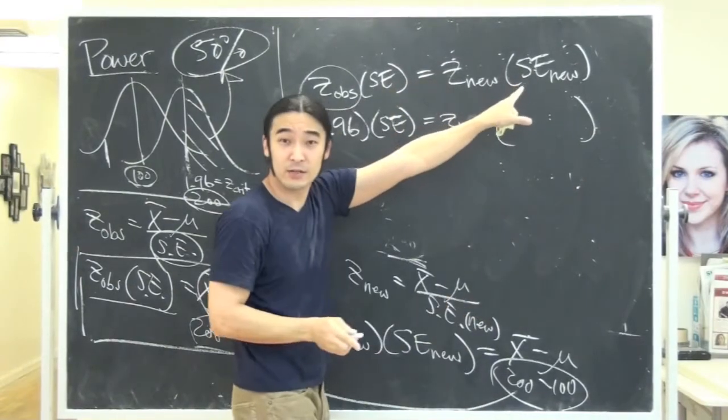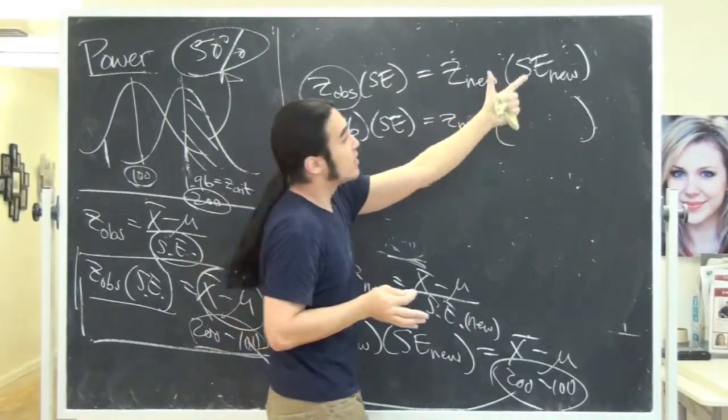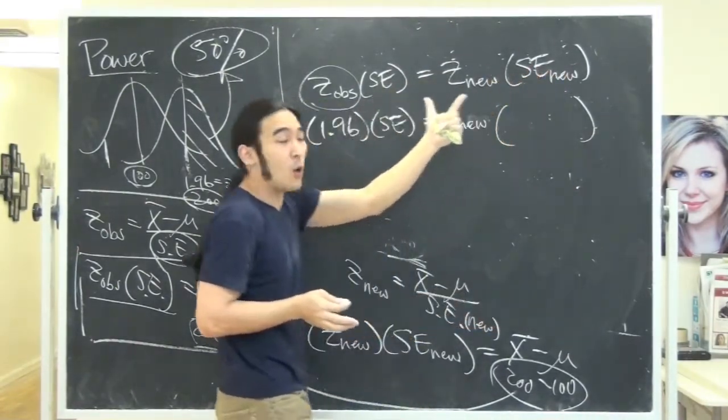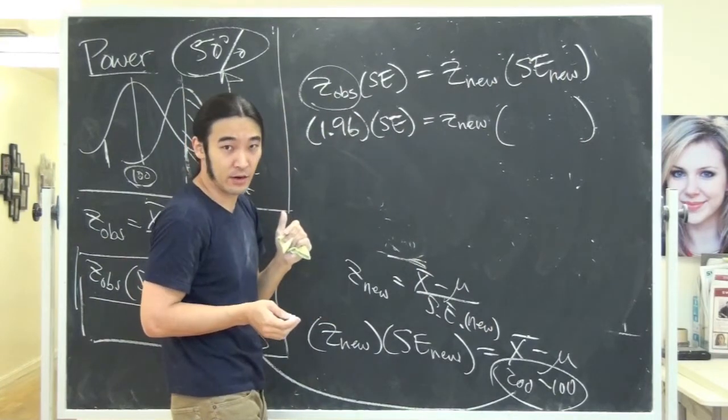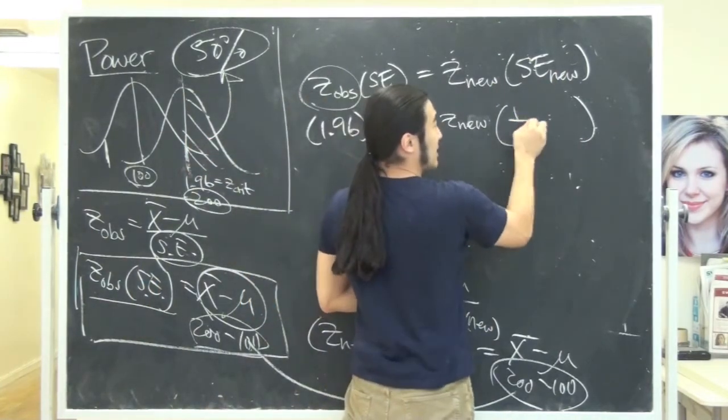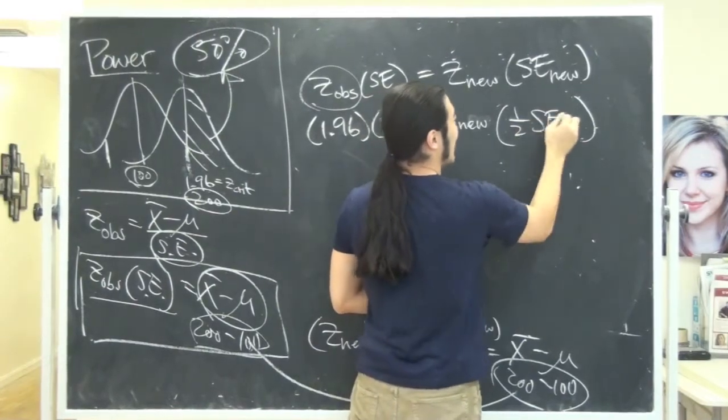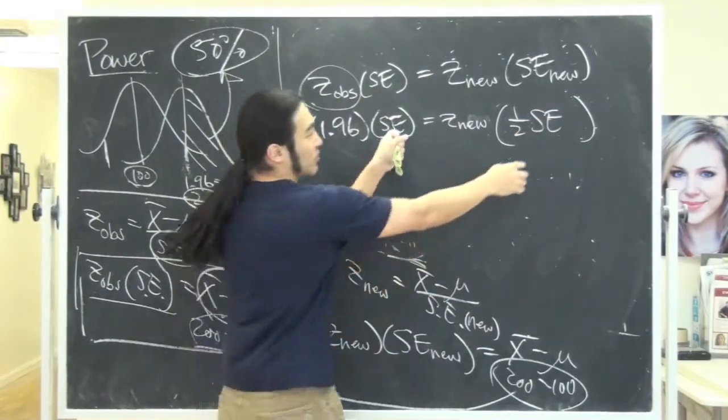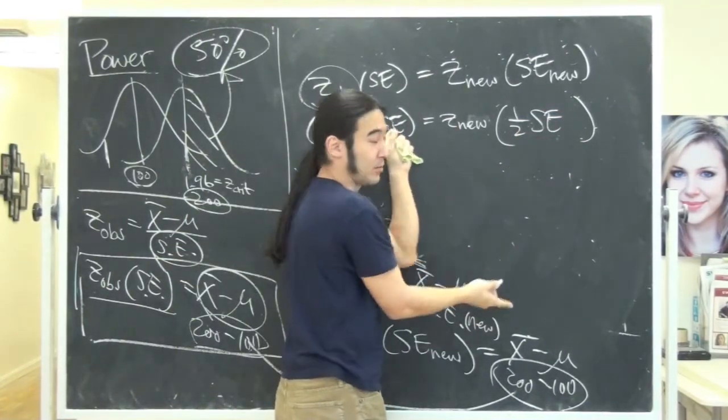So the z observed from before, we said this 200 must be right on the critical mark. The critical z value is 1.96, so the z observed must be exactly the same because he's right here. So the z observed was 1.96. The standard error, I don't even know it. It doesn't even matter. The z new, that's what we're trying to figure out. That's whatever it is. But this, this is what he really cares about. Remember we solved earlier?